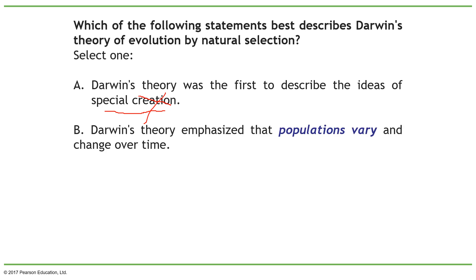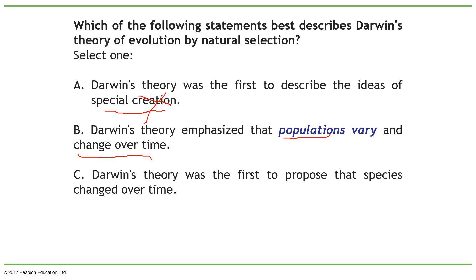Now option B: Darwin's theory emphasized that populations vary and change over time. Population and change over time are both very important for Darwin's theory. This seems to be fine. Let's see if there is one that is more specific and explains more things.